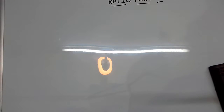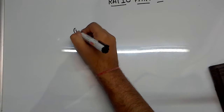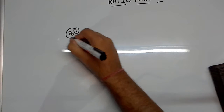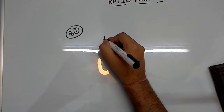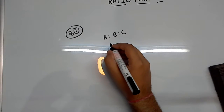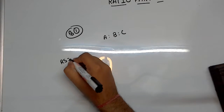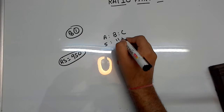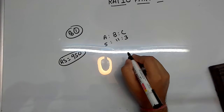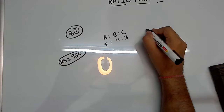Let's look at the first question. You will find a download link in the video description. Question 1 is basic in nature. An amount of rupees 950 is distributed among A, B, and C in the ratio 5 : 11 : 3. What is the difference between the share of B and A?